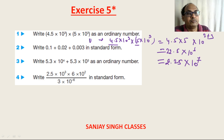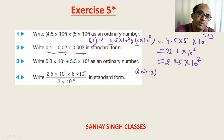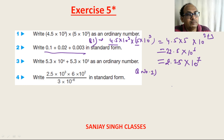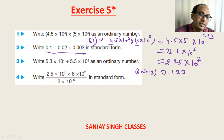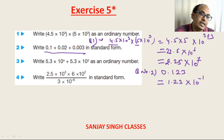Question 2: We need to write the result in standard form. Adding the two numbers together gives 0.123. Writing in standard form: 1.23 × 10⁻¹, since we shifted the decimal one place.